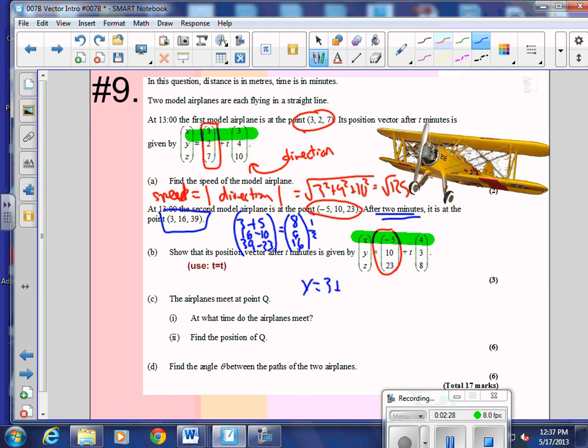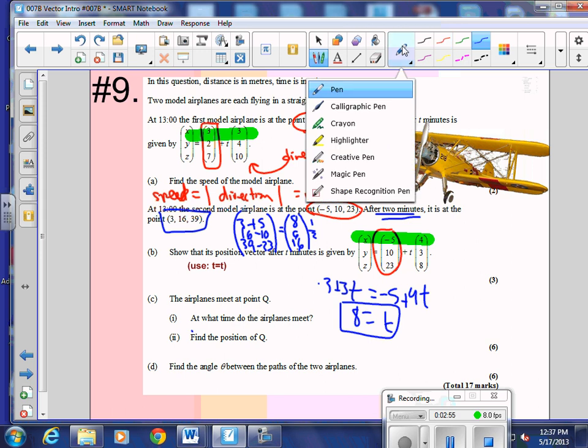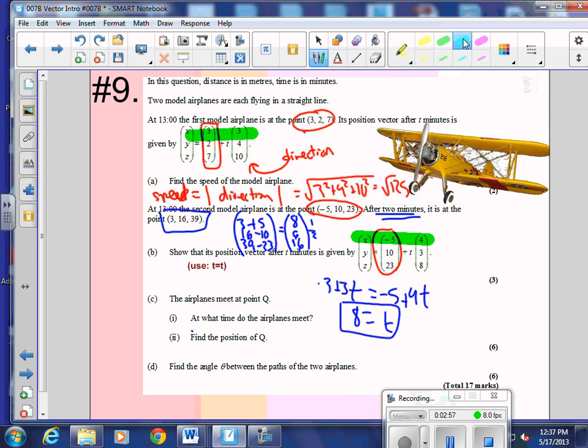x is equal to 3 plus 3t. x is also equal to negative 5 plus 4t. So there's a nice little value here. If we add 5, we get 8 is equal to 4t minus 3t, which is t. T equals 8. At what time do they meet? T is equal to 8. Now we're going to see if they both meet at that. So let's double check.